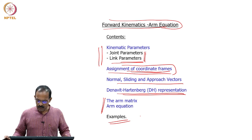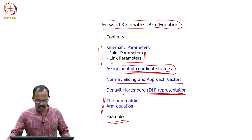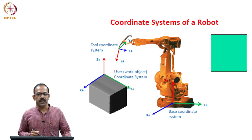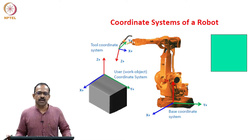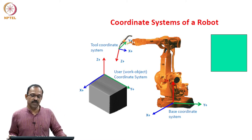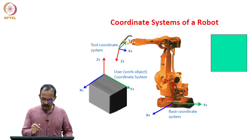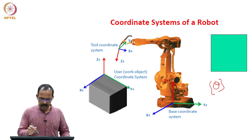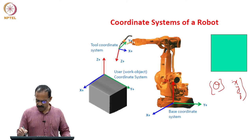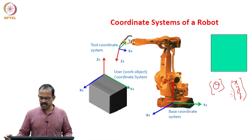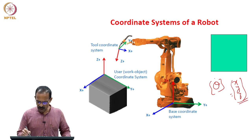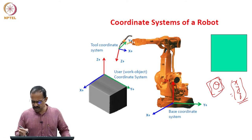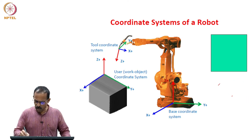The need for forward kinematics was explained earlier. Most of the time we are interested to know the position of the tool tip, and if we move these joints, how the tool tip gets affected is the relationship we are interested in. If I supply the joint values theta and substitute these values, can I get the position x, y, z of the tool? That is basically the kinematics problem.